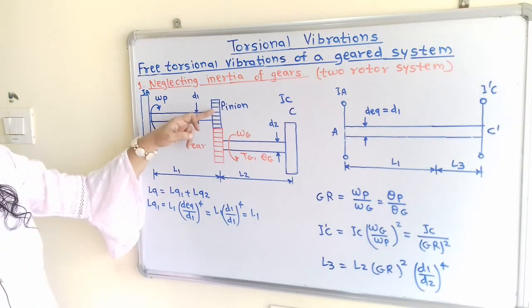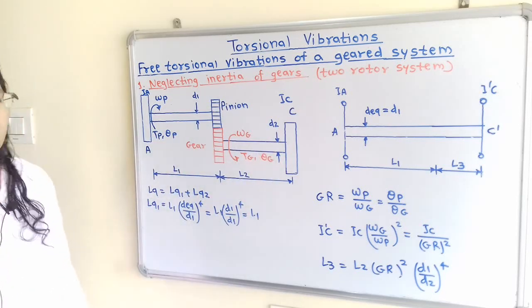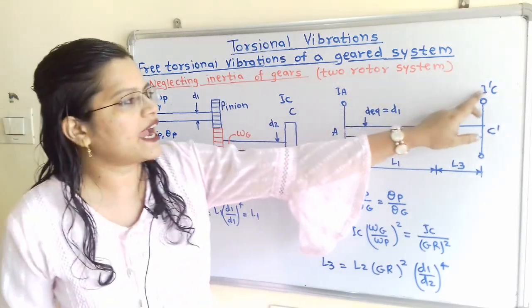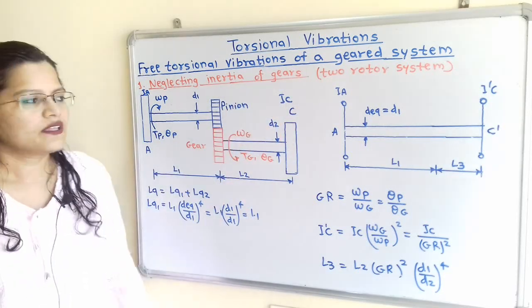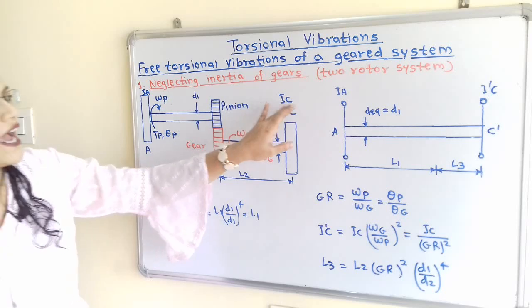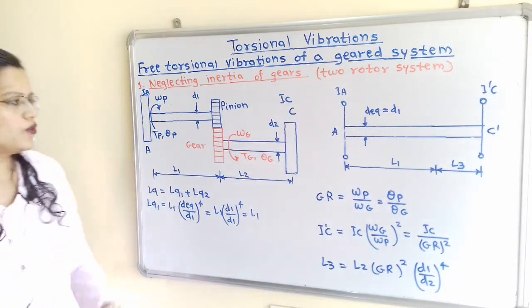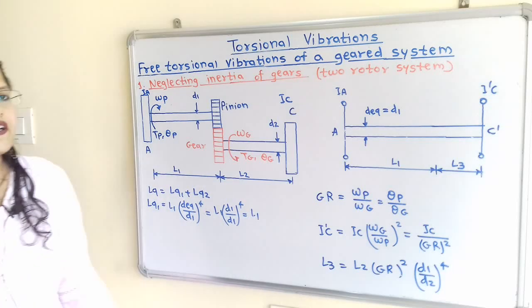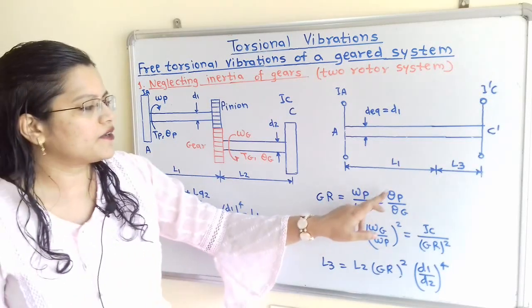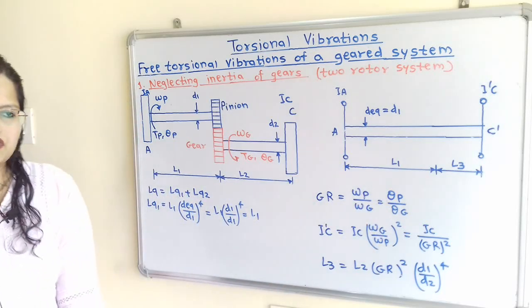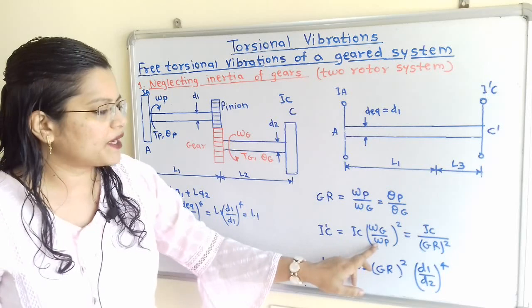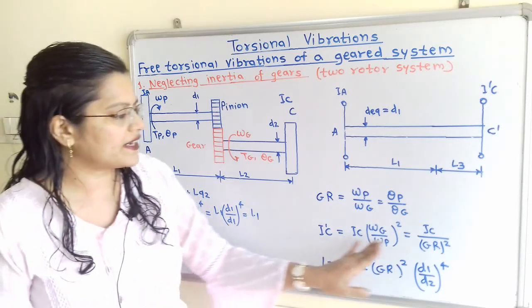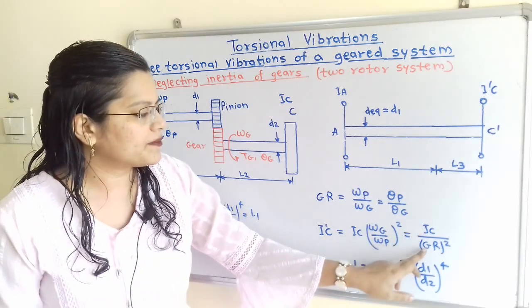The motion is transmitted through the pinion and gear system to rotor C. For rotor C in the equivalent system, the mass moment of inertia is I'C, whereas in the actual system it is IC. The gear ratio is omega P divided by omega G, which also equals theta P divided by theta G. The formula for I'C is IC multiplied by (omega G / omega P) squared, which gives I'C equals IC divided by GR squared.